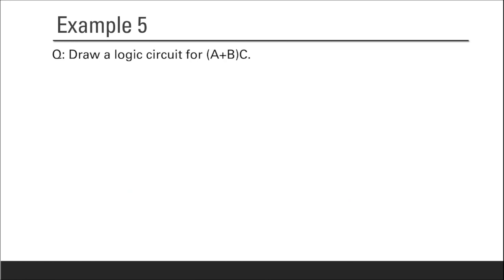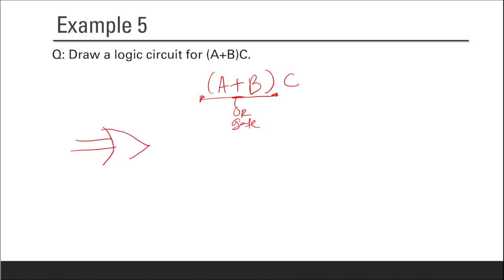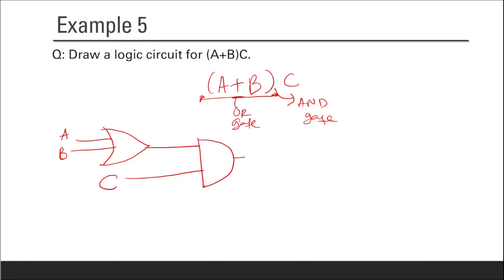Example 5: draw a logic circuit for (A plus B) dot C. First, handle the bracket — A plus B is an OR gate taking inputs A and B. Then connect the OR gate output to an AND gate along with input C. This gives the complete logic circuit for (A plus B) dot C.